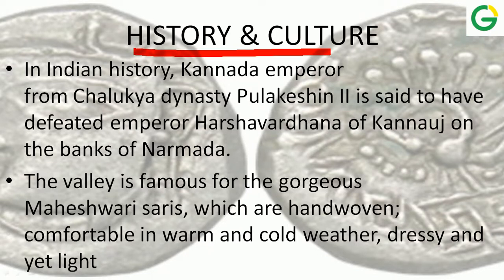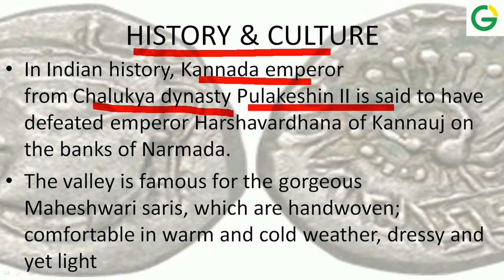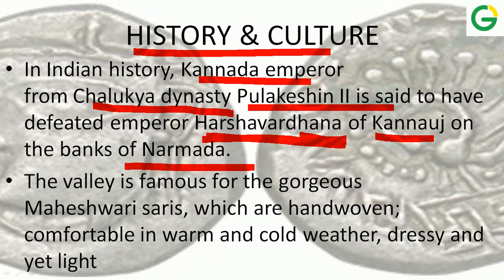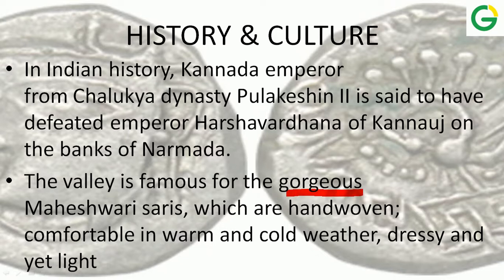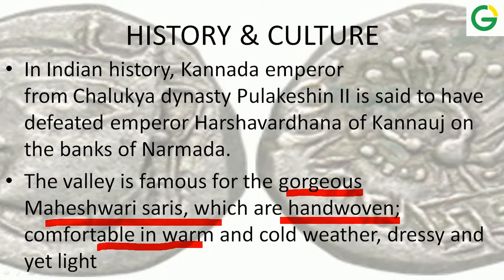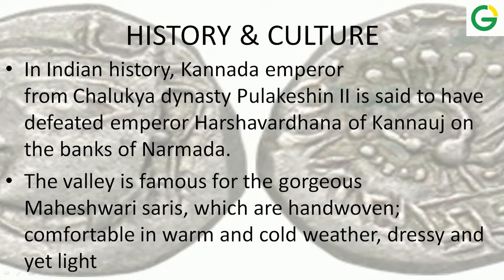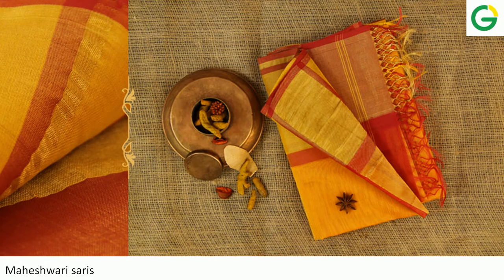Historical and cultural aspects of the Narmada river: the Karnata emperor from the Chalukya dynasty, Pulakeshin II, is said to have defeated Harshavardhan — the last Hindu emperor of ancient India — on the bank of the Narmada river. The gorgeous Maheshwari sarees, which are hand-woven, comfortable in warm as well as cold weather, dressy and light-weighted, are also very famous. This is a cultural aspect of the Narmada river basin.